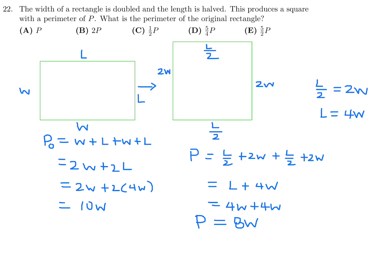What they're asking for is the perimeter of the original rectangle. So what is it in terms of P, which is the perimeter of the square? Well we just divide. P0 over P is equal to 10W divided by 8W. And therefore P0 over P, the W's cancel, and you are left with just 10 over 8 which is 5 over 4. And then when you cross multiply P0 is equal to 5 over 4P. So the perimeter of the original rectangle in terms of P is 5 over 4P. So number 22, the answer is D.